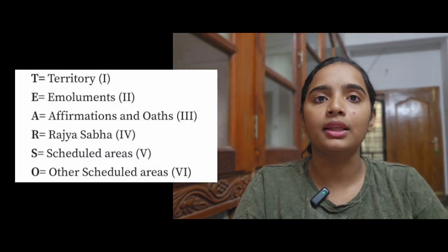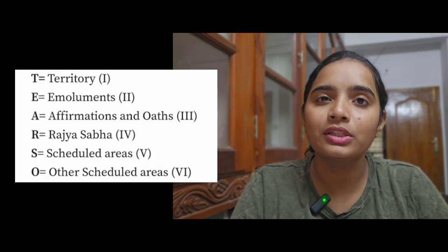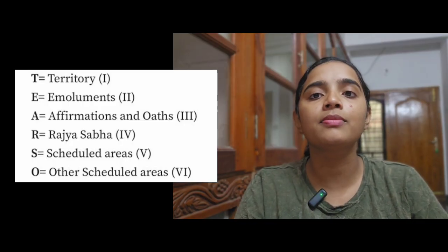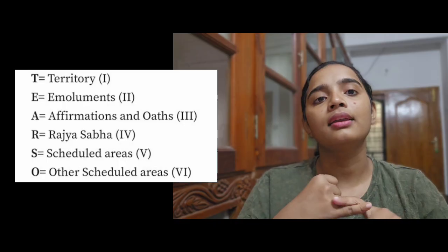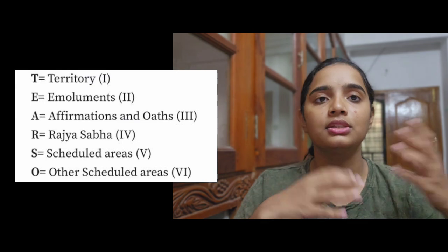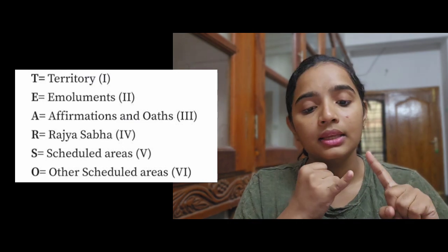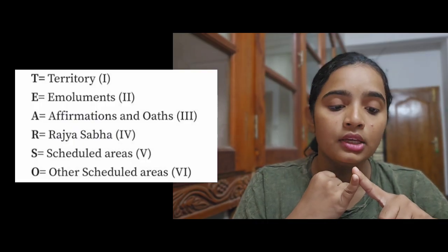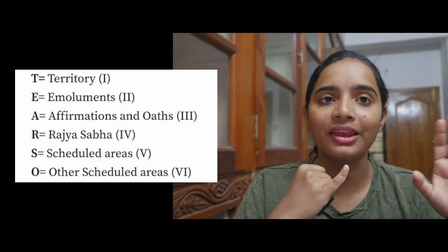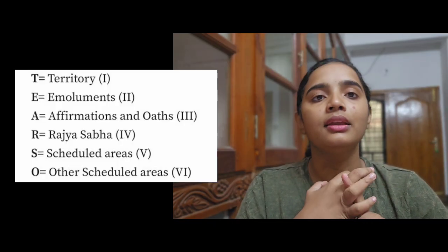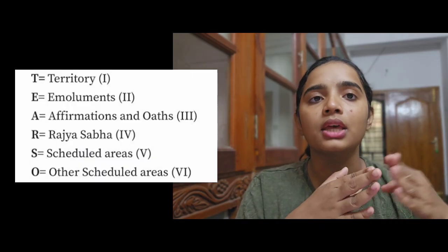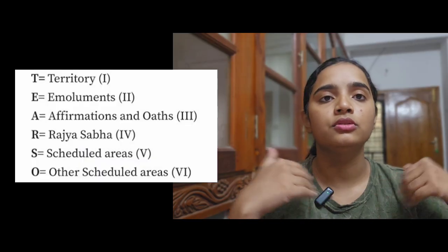The first schedule is the TEARS of Old PM. T is for Territory. The first schedule is the name of the States and their territorial jurisdiction. The second part is Union Territories. In India, there are states and union territories. These are the two territorial jurisdictions.